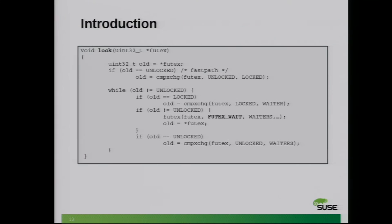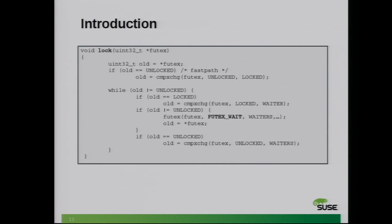I've shown an example for lock and unlock operations to get an idea of real-world usage of Futexes. In this lock function, if the lock is uncontended, you'll just do a simple compare-and-exchange. If it's unlocked, it'll set it to locked and return unlocked. So that fast path really is just a single compare-and-swap.